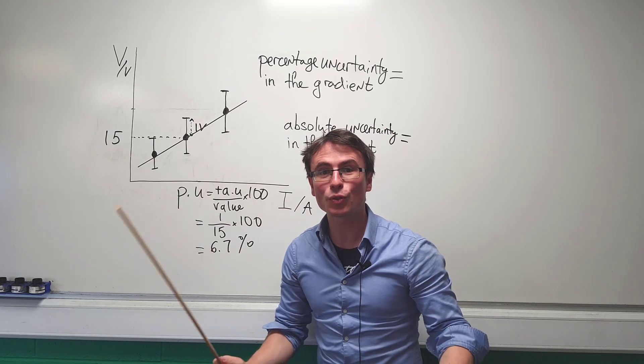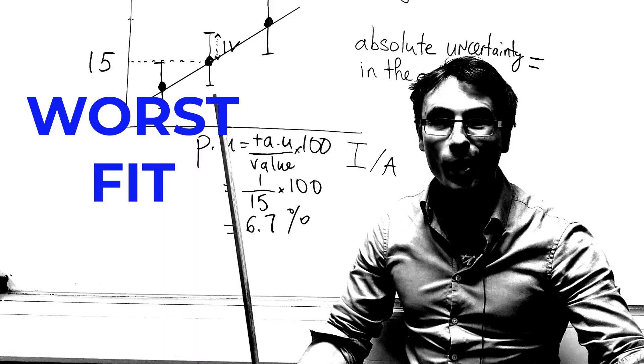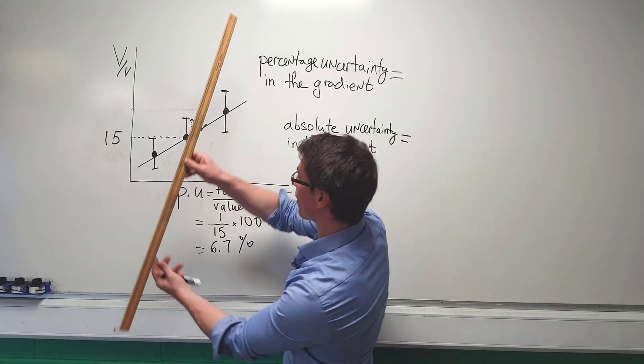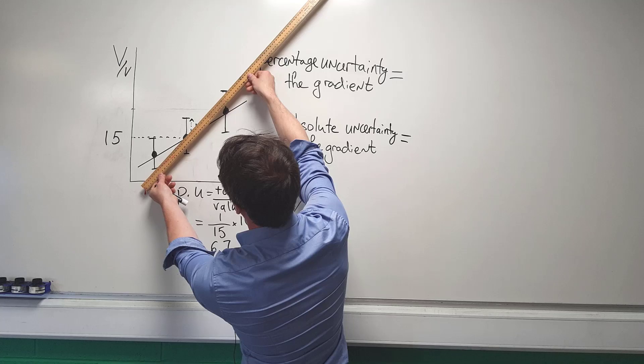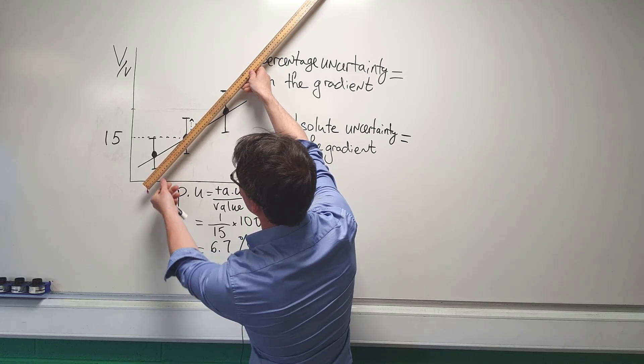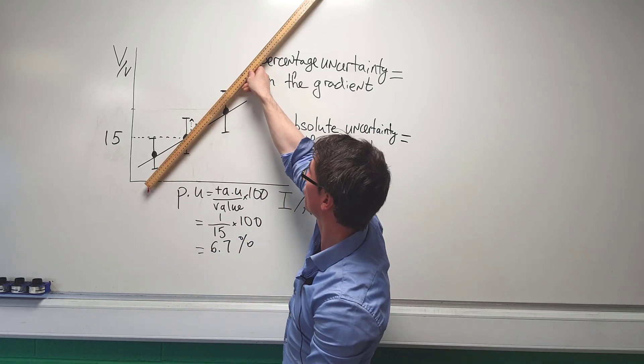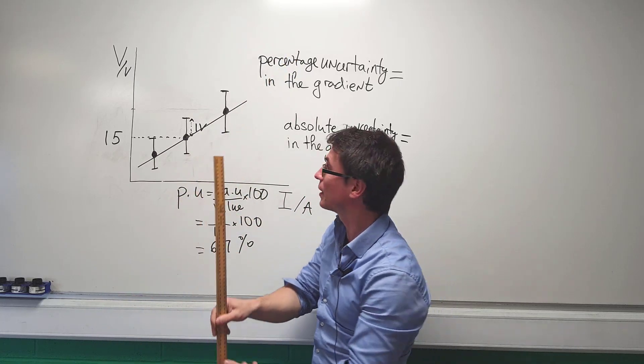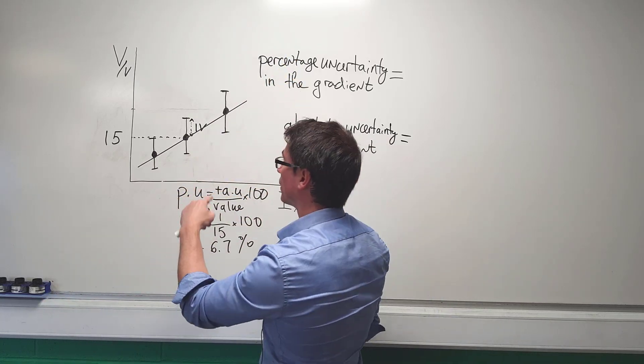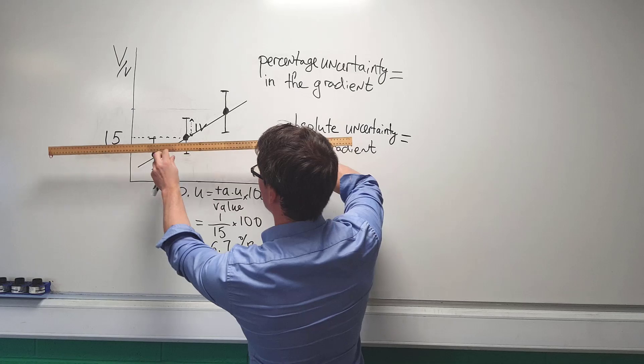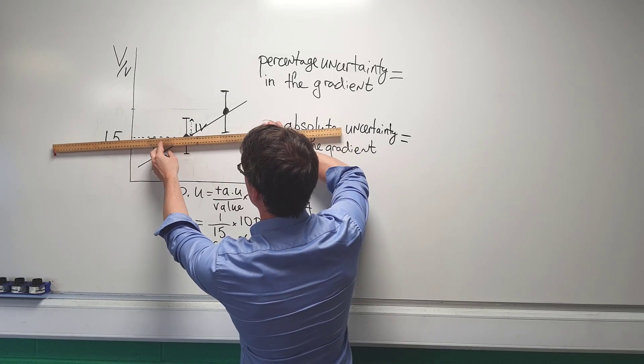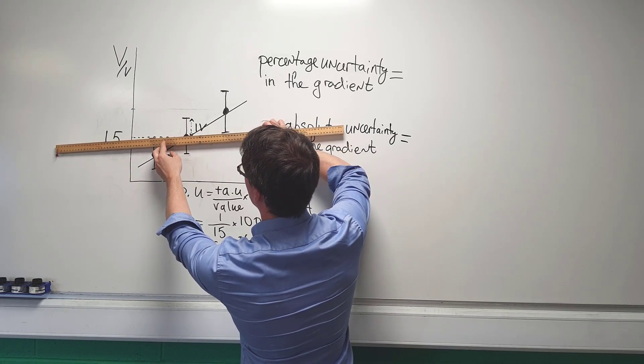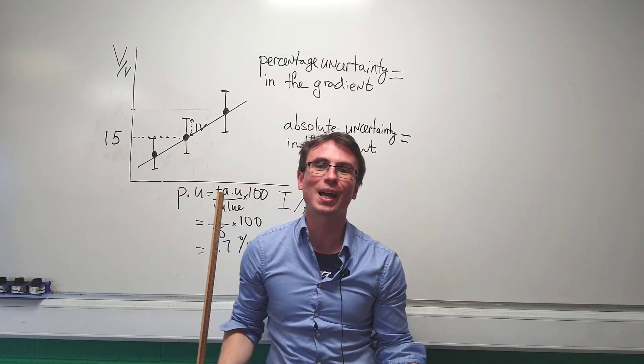We'll also need to draw the line of worst fit. The rule I tend to remember is that it's going from the bottom of the bottom error bar to the top of the top error bar. Bottom of bottom to top of top. You can also do this the other way, that is the top of the bottom error bar to the bottom of the top like this. And there are two possible lines of worst fit.